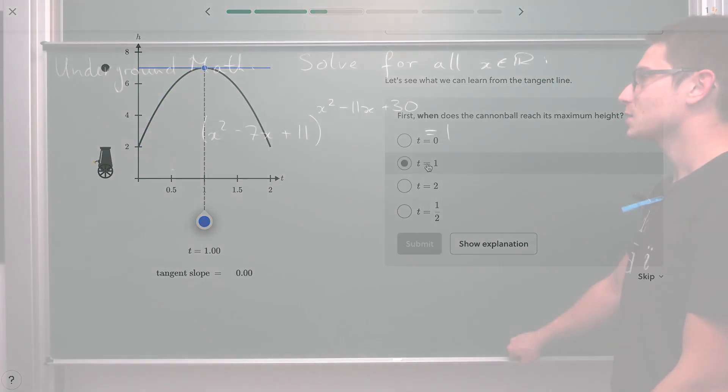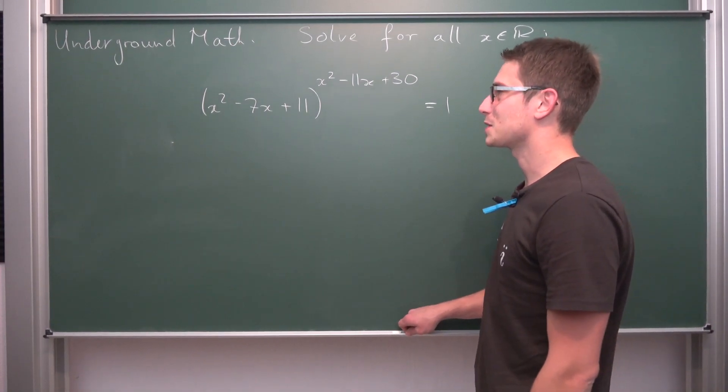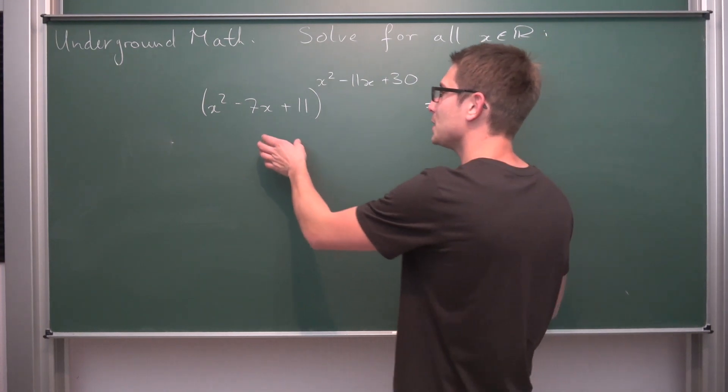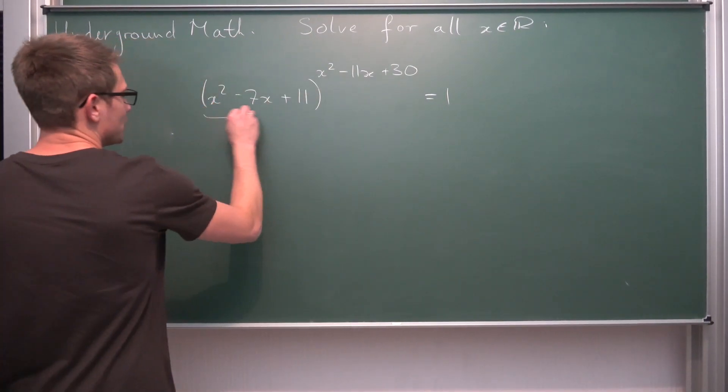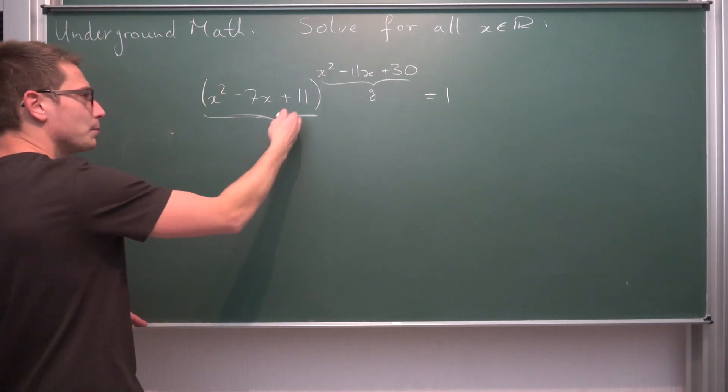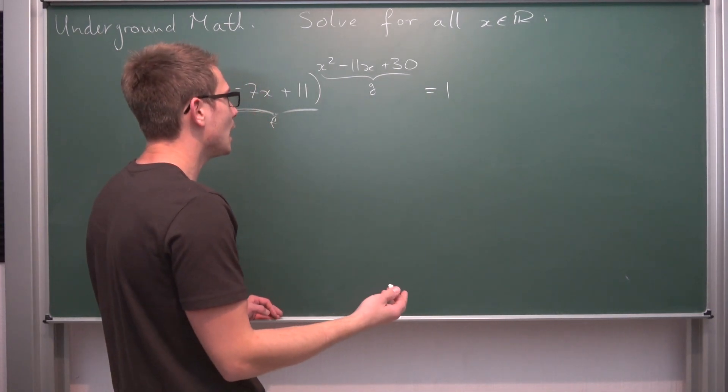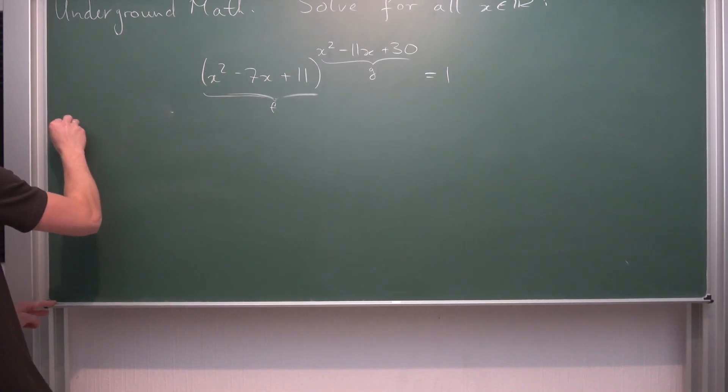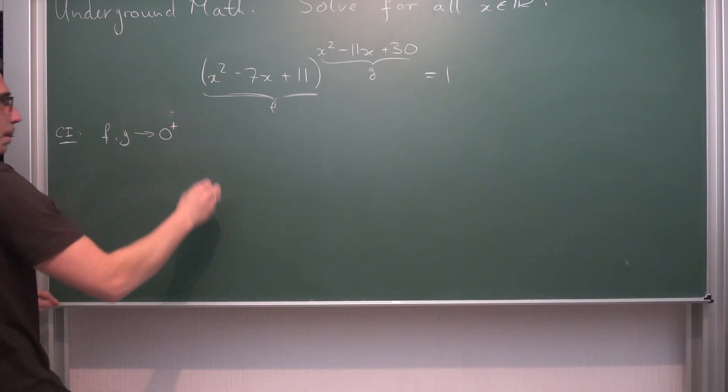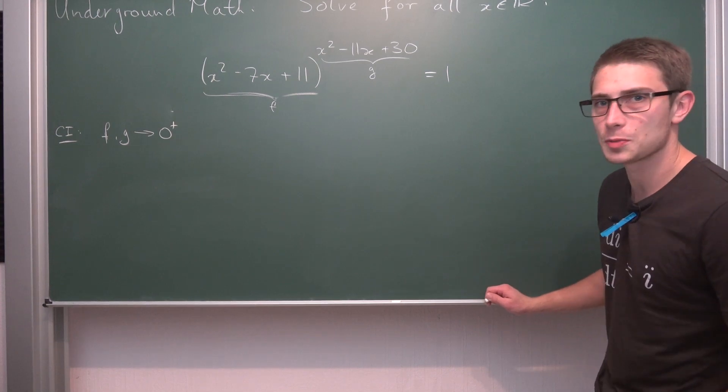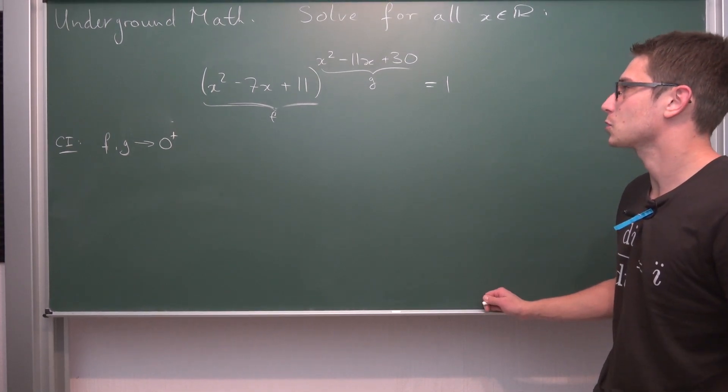Now we're going to dive right in. The first thing that actually came to my mind was pretty limit-like. I thought of the limit as this thing, the base, is called f, and this thing here is called g. When both approach 0 from the right, in the limit, this could make it equal to 1. So this is one of the cases we could have: f and g go to 0 plus. I don't know if this is one of the possible things that could happen, but we're going to try it out.